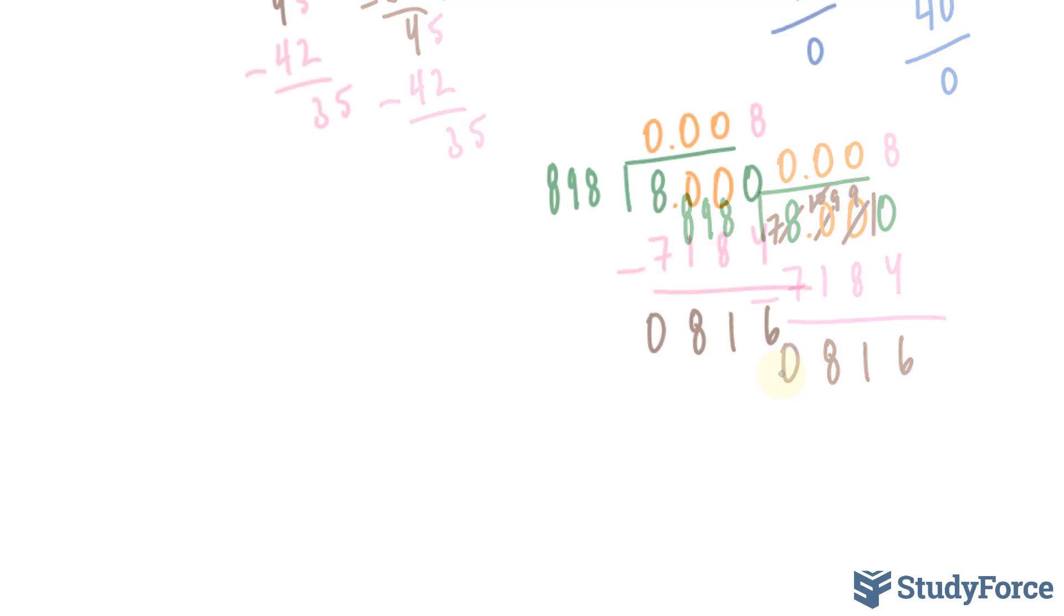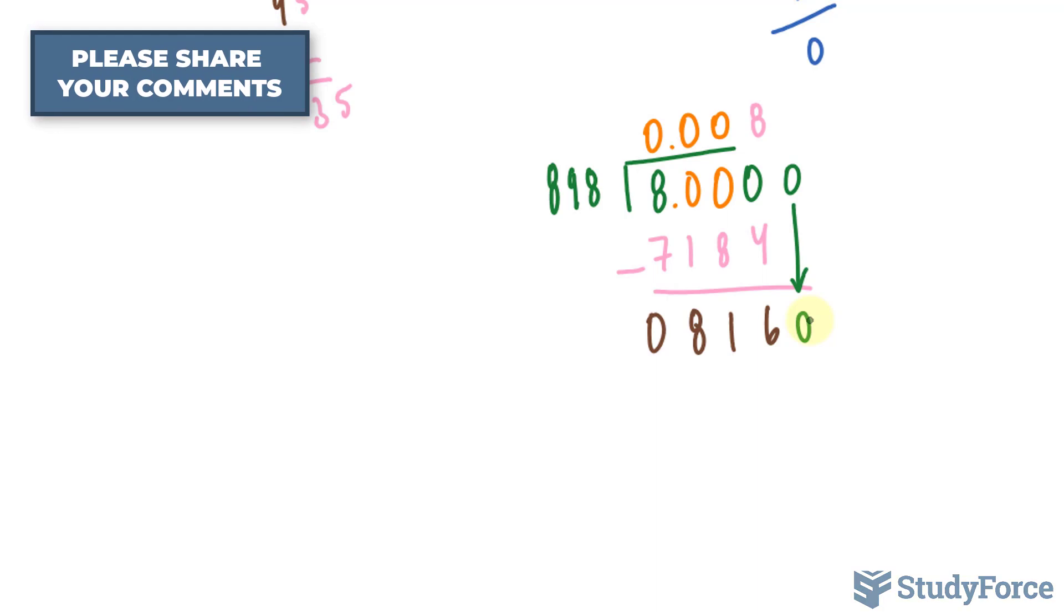Not good enough. Since we don't want remainders, I'll add another 0 here. Bring that 0 down. And we have to figure out how many times this fits into 8,160. Could it be 9 or 8 again?